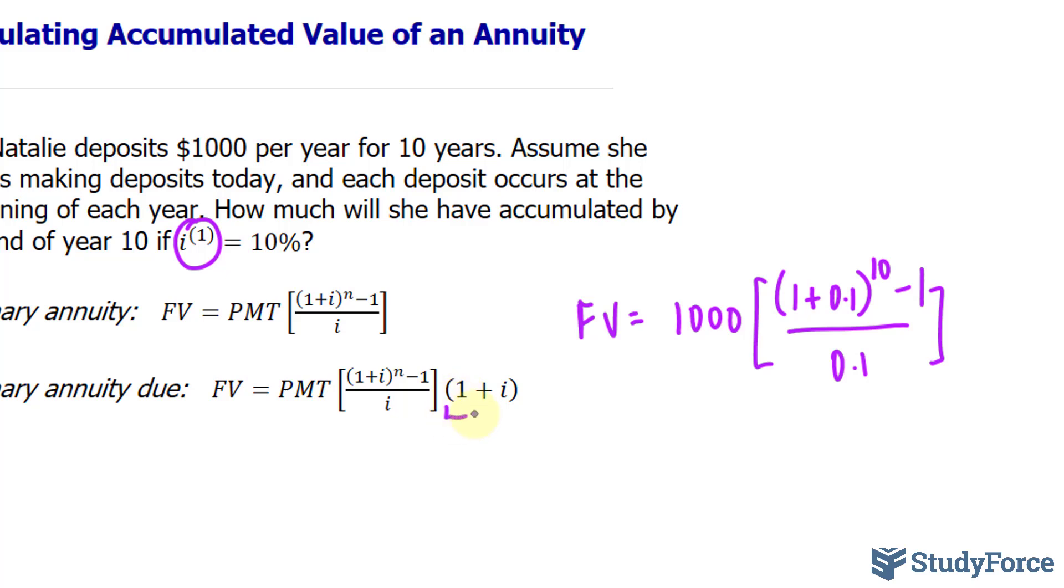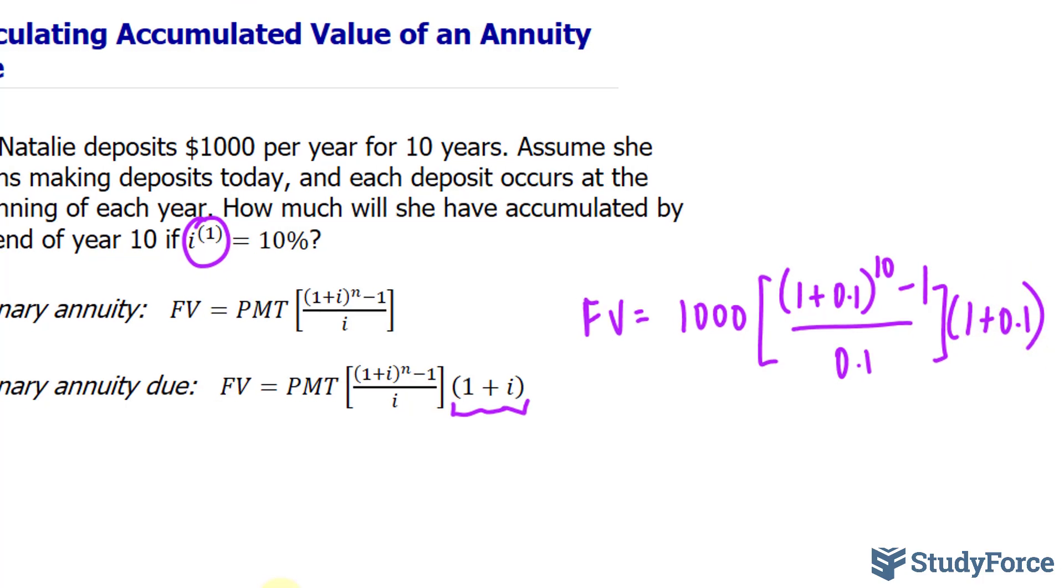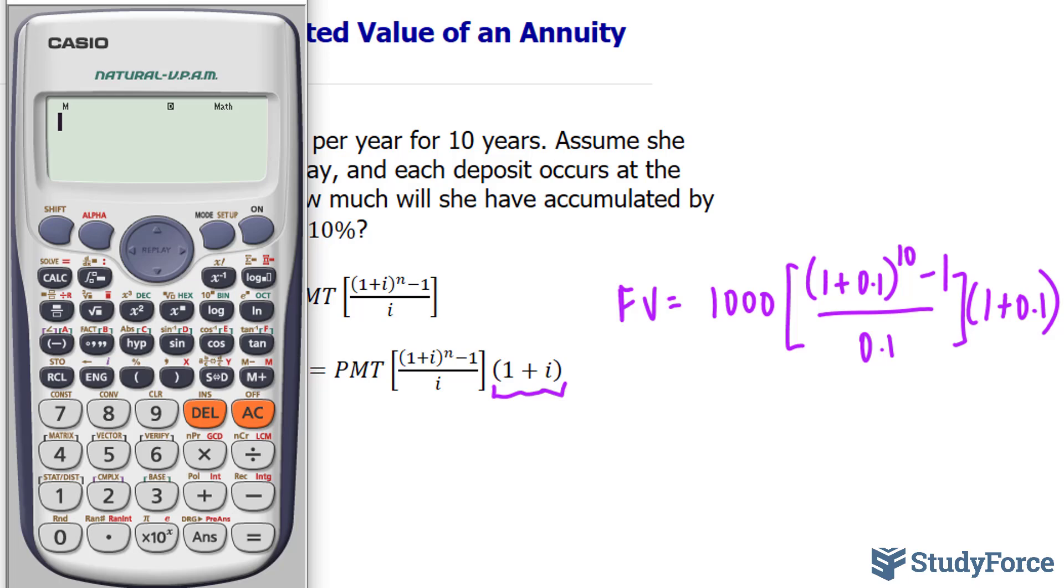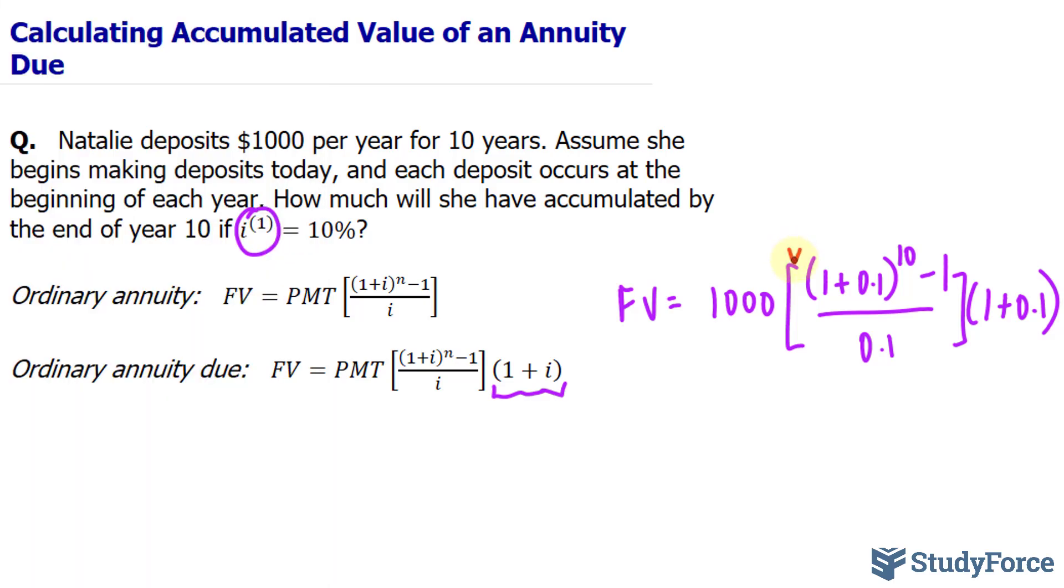And this is then being multiplied by (1 + i). So we have 1 plus 0.1. We'll go ahead and input this into our calculator, and I'm using a scientific calculator for this. So I'll have 1,000, and we open up that bracket.